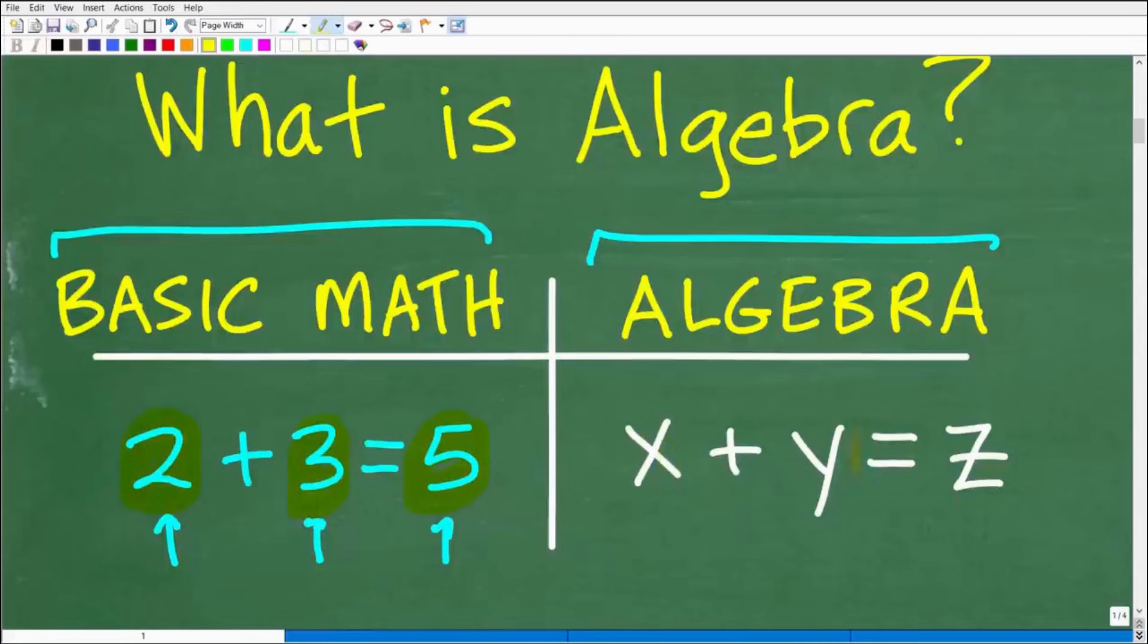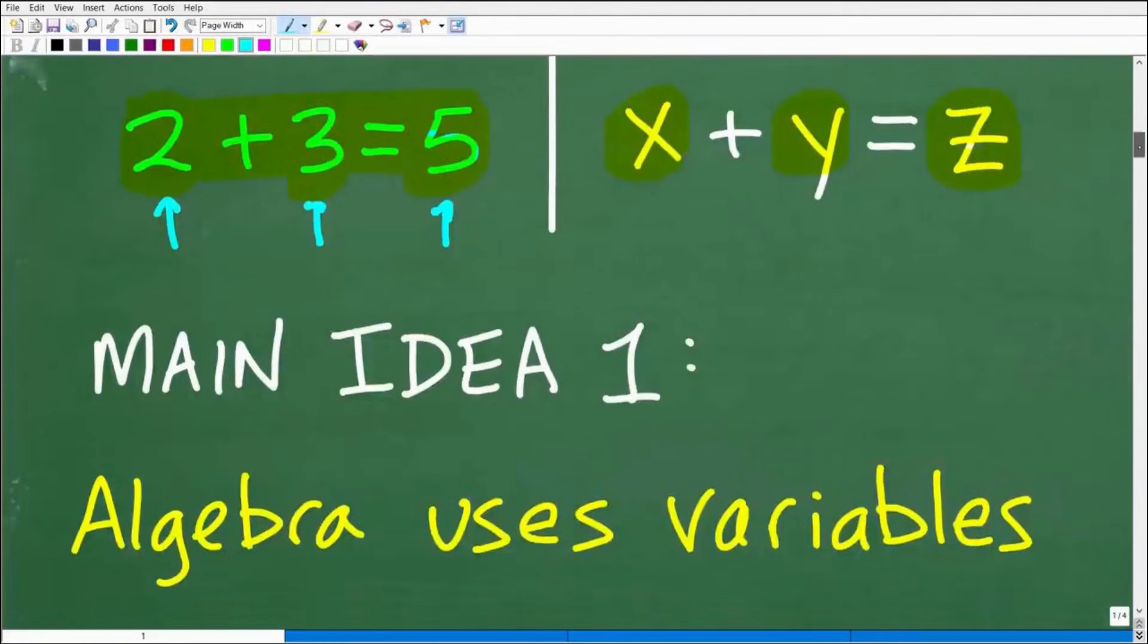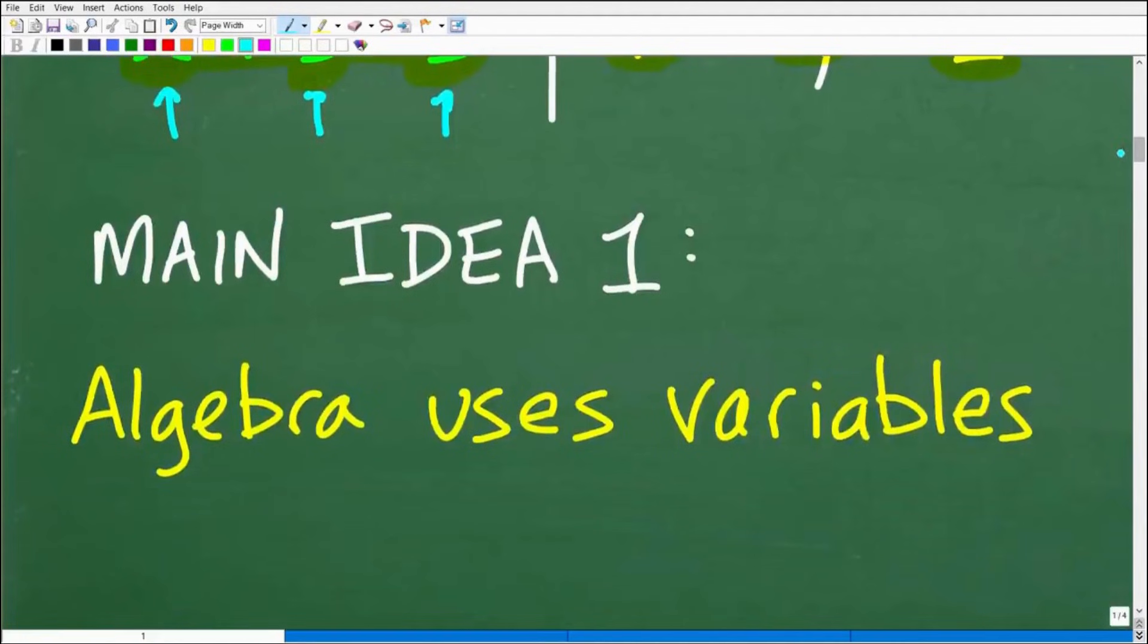So in algebra, we use variables, symbols, oftentimes letters to simply represent numbers. So this situation right here, 2+3=5, could be represented this way, where we have one number plus another number is equal to yet another number. So the first main idea about algebra is that it uses variables to represent numbers.